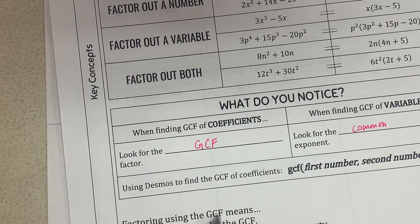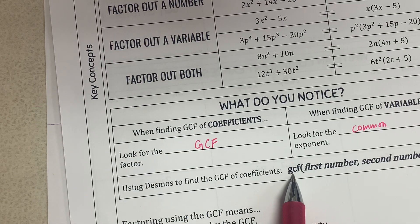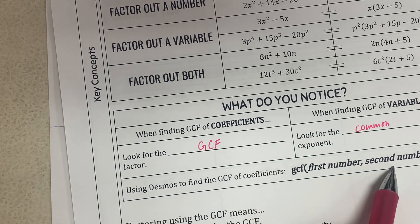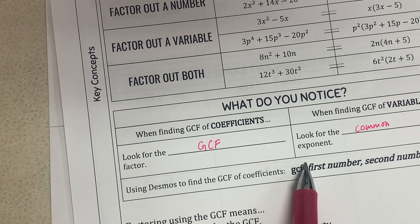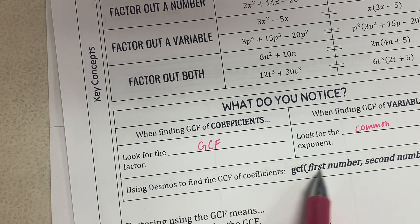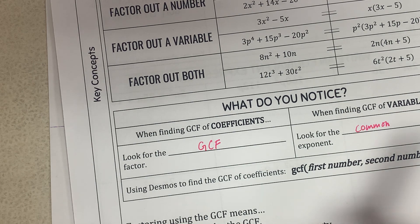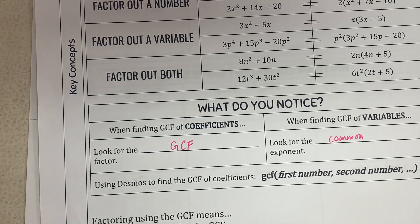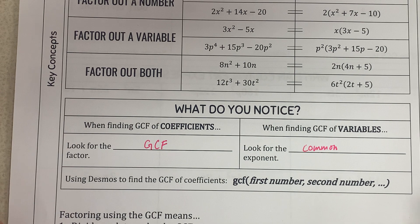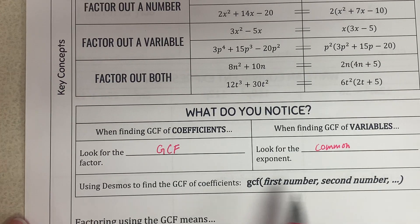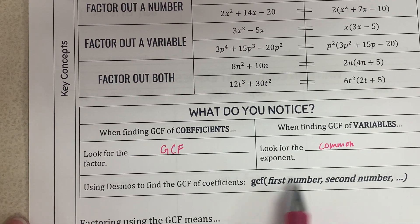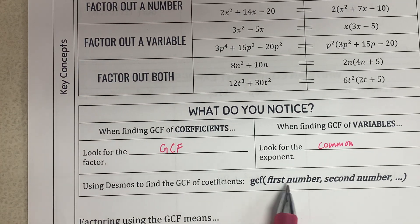There is a method to find the GCF using a calculator. You write GCF, then parentheses, put in the first number and second number, and it will show you the greatest common factor. I have not tried this in the Desmos calculator, so I'm not fully familiar with it, but I can look into it and share a video later.